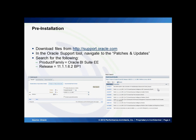To download the files, you'll need to go to the Oracle Support website and navigate to the tab called Patches and Updates. In the search box, you'll need to put in the string Oracle BI Suite EE. You'll need to indicate that the release you're looking for is 11.1.1.6.2 bundle patch 1. Also don't forget to indicate what your operating system is. Once you hit the search button, you'll get a result set that looks similar to the results shown in the screenshot on the right.